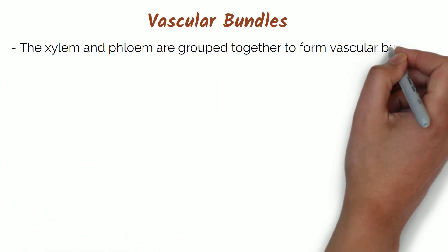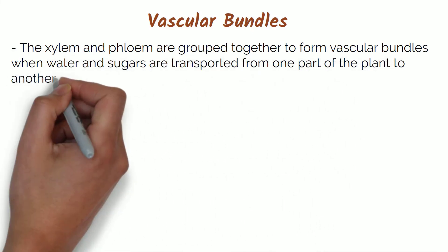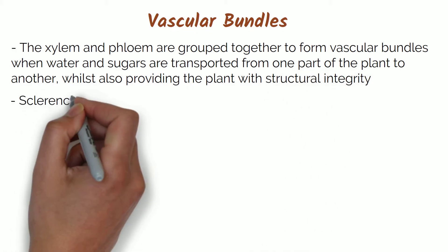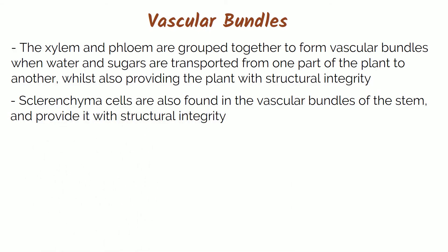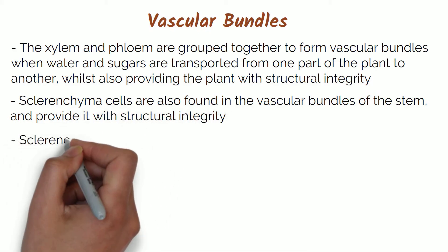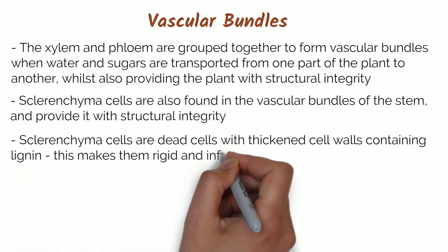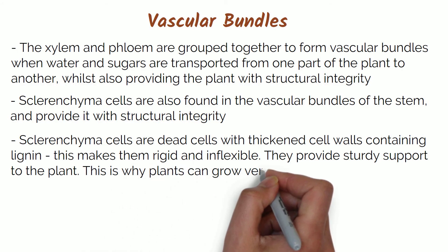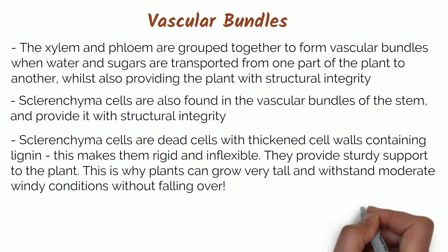The xylem and phloem are grouped together to form vascular bundles when water and sugars are transported from one part of the plant to another, whilst also providing the plant with structural integrity. Sclerenchyma cells are also found in vascular bundles of the stem and provide structural integrity. Sclerenchyma cells are dead cells with thickened cell walls containing lignin, which makes them rigid and inflexible, providing a sturdy support to the plant.